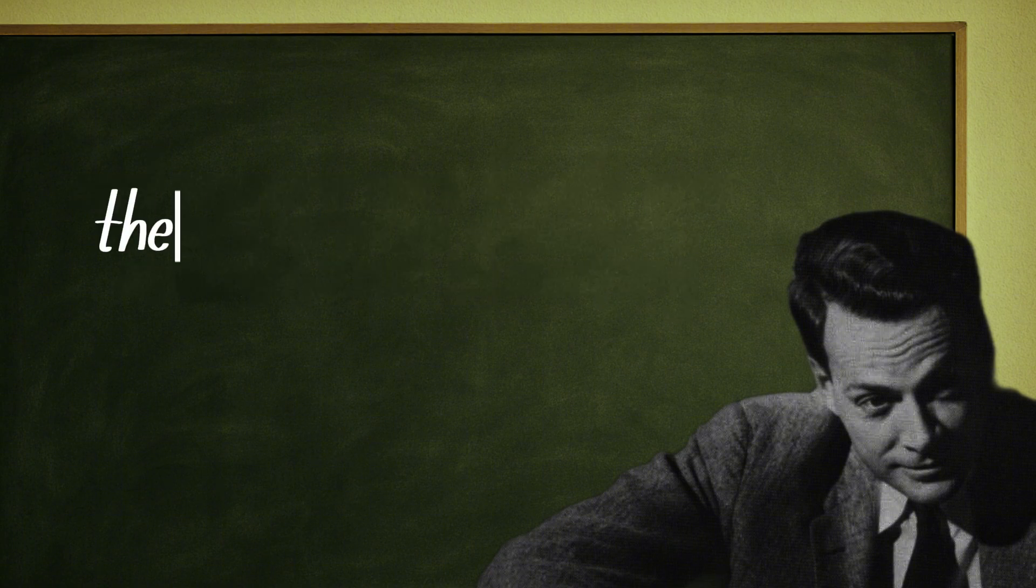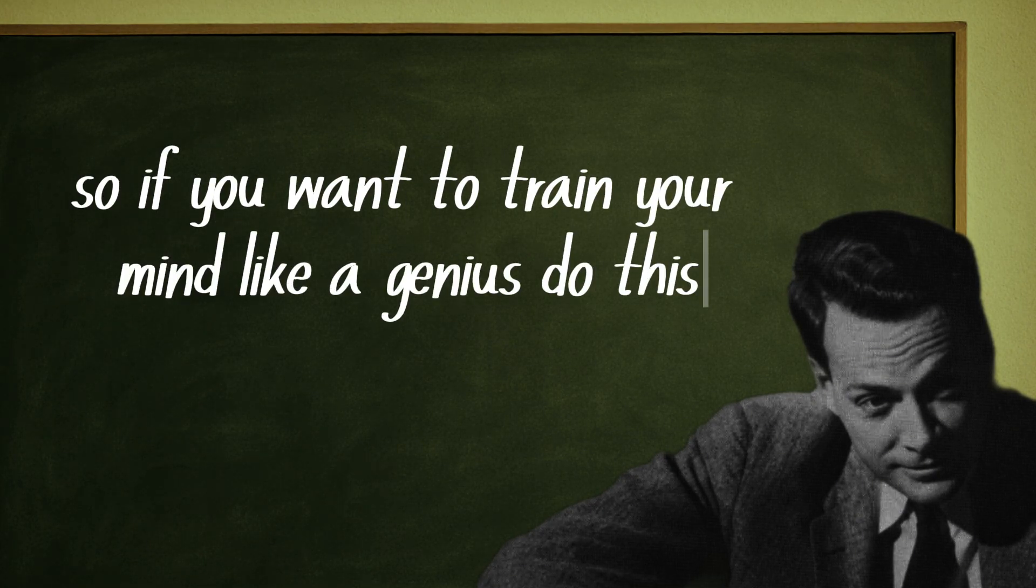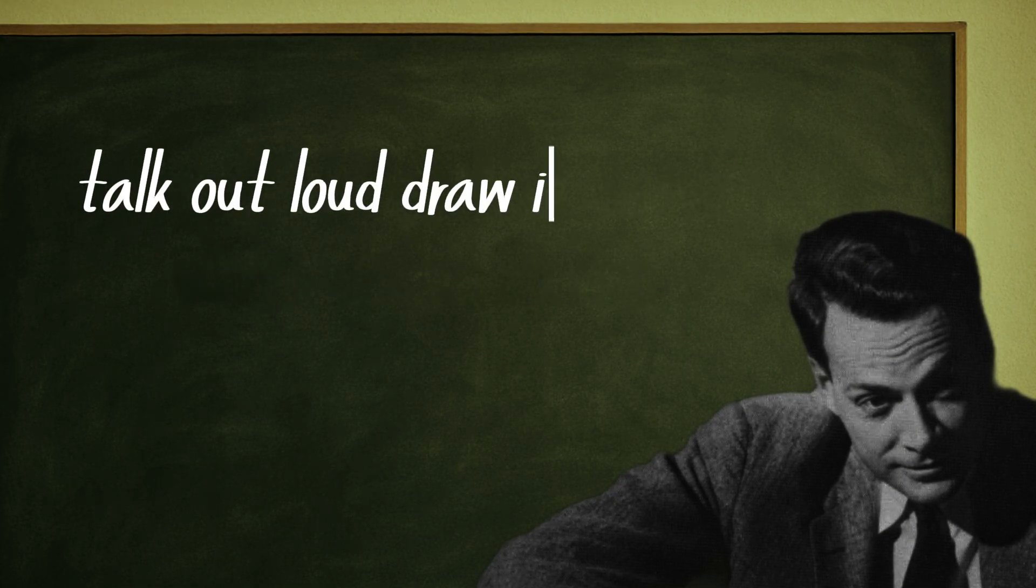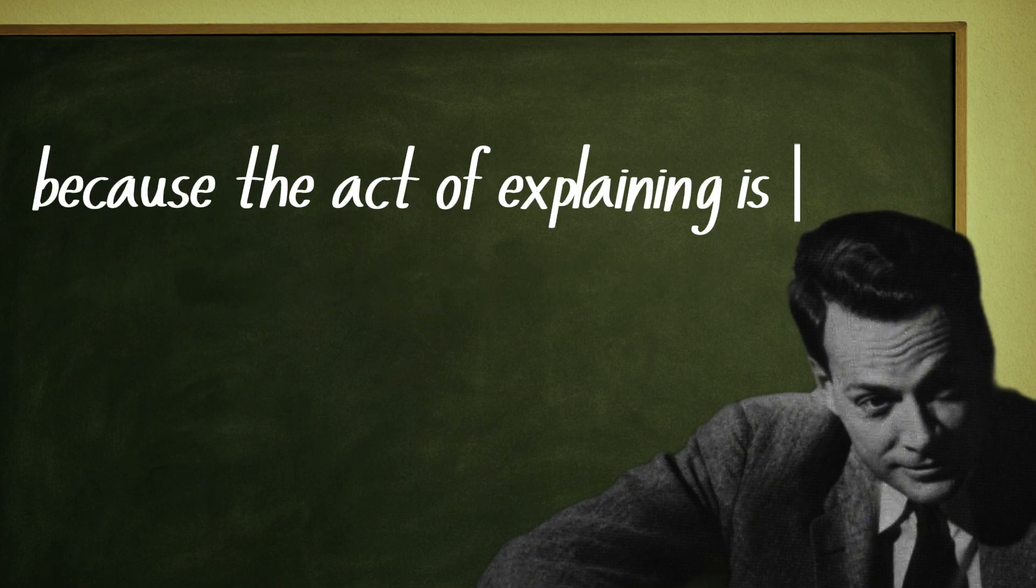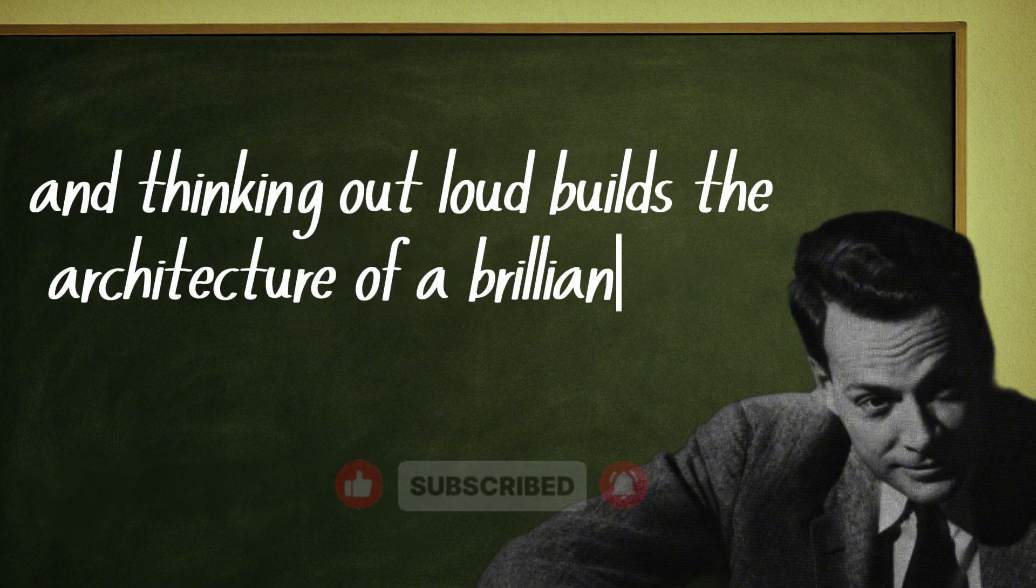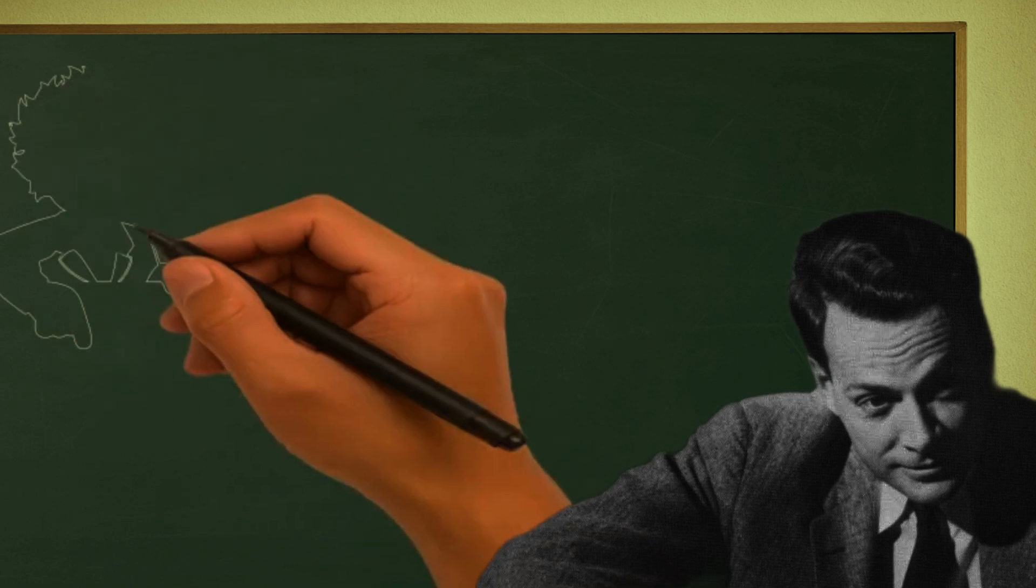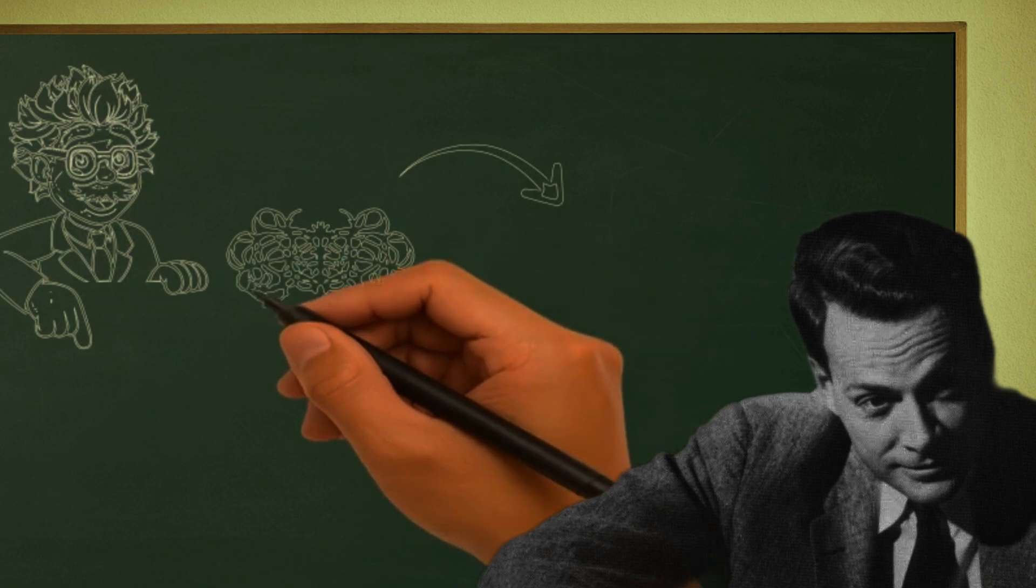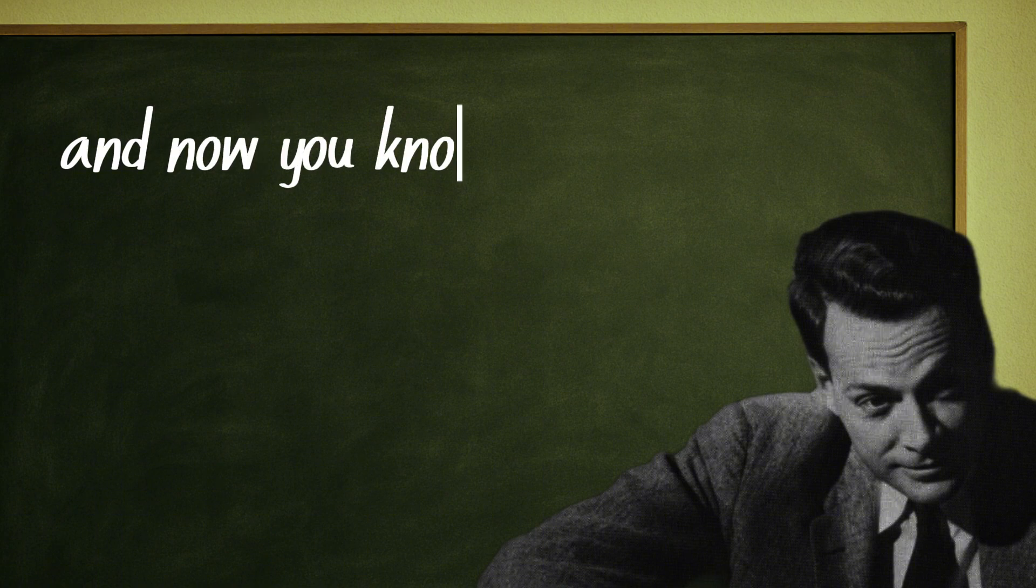There's no more memorizing, there's living understanding. So if you want to train your mind like a genius, do this: explain what you've learned, even if it's to no one. Talk out loud, draw it, record yourself, write short explanations. Because the act of explaining is the act of thinking out loud, and thinking out loud builds the architecture of a brilliant mind. The secret isn't knowing everything, it's learning to think about what you know. Geniuses don't have bigger memories, they have better mental models. They see connections where others see confusion. They see the invisible because they've trained their eyes to notice it. And now you know how to do the same.